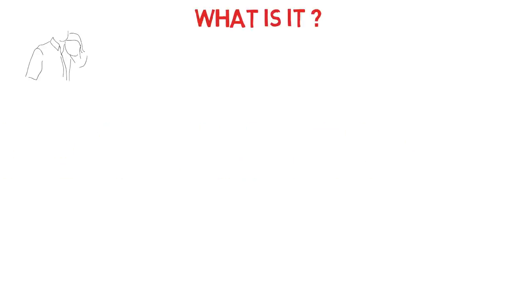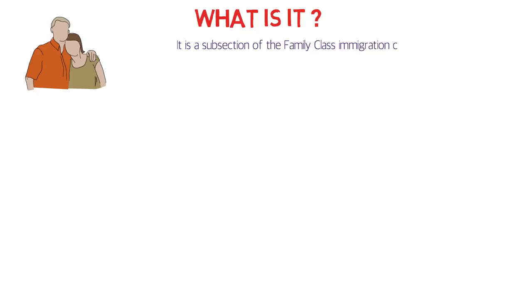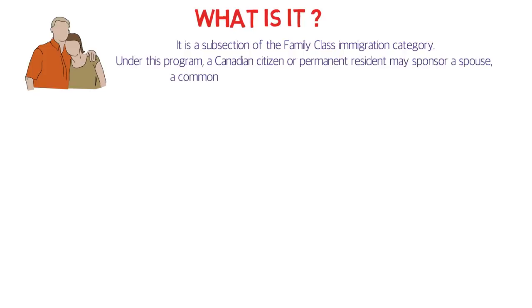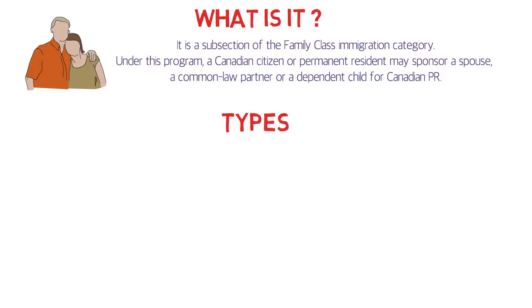The spousal sponsorship program is basically a subsection of the family class immigration category — you will hear this term many times in your forms. Under this program, a Canadian citizen or permanent resident may sponsor their spouse or dependent child for Canadian PR. There are two types: inland spousal sponsorship and outland spousal sponsorship.